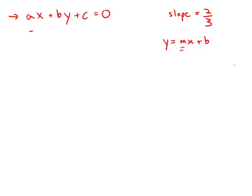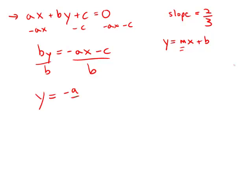The way I'm going to do that: subtract ax from both sides, subtract c from both sides, so I get by = -ax - c. Then I'm going to divide both sides by b to isolate y, remembering to divide through each term. So y = -a/b times x - c/b.